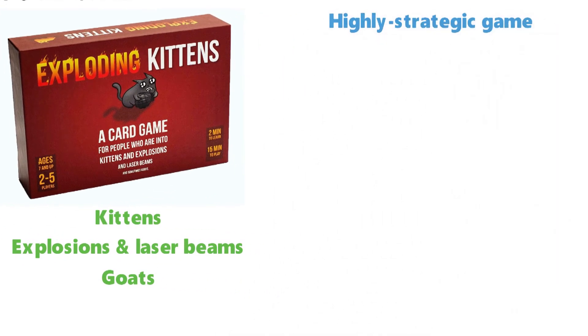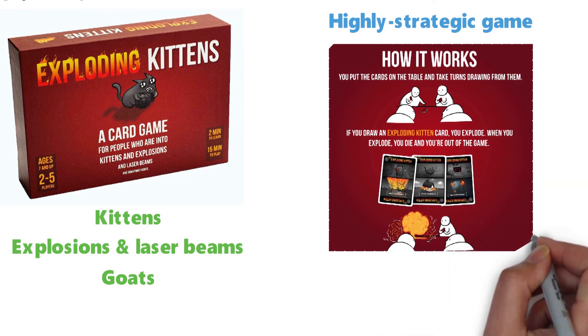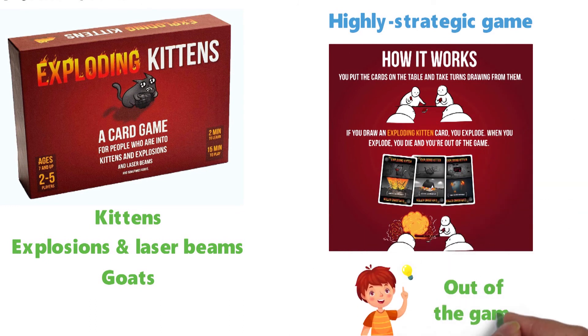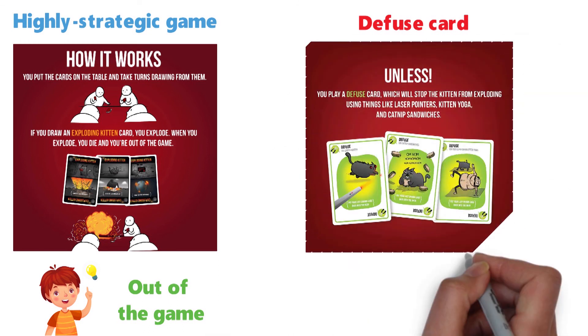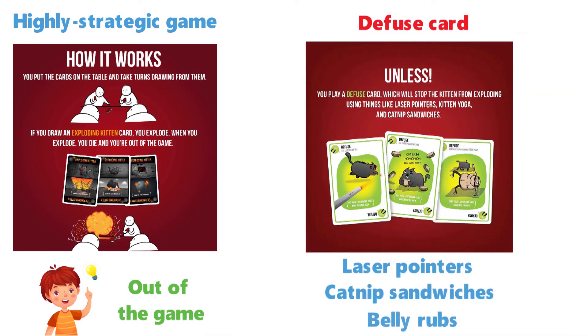In this highly strategic game, players draw cards until someone draws an exploding kitten, at which point they're out of the game. If that player has a defuse card, they can defuse the exploding kitten using things like laser pointers, catnip sandwiches, and belly rubs.